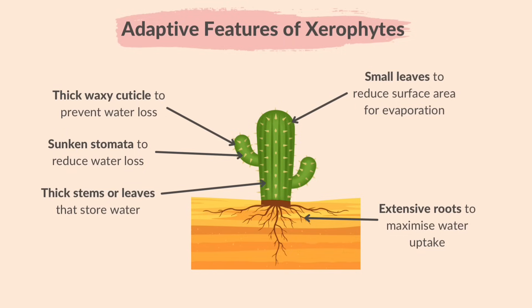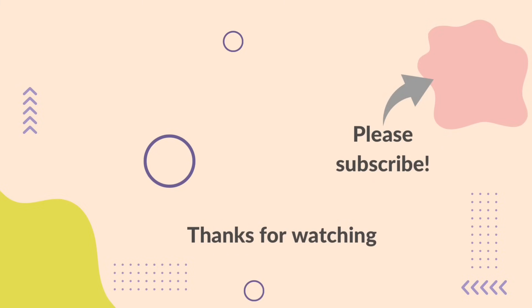You should be able to interpret images or other information about a species to describe its adaptive features. That concludes Part 1 of Chapter 18, Variation and Selection. Please visit our channel to explore the Cambridge IGCSE Biology Playlist where you can find Part 2 of Chapter 18. Hope this video helped you. Please share your thoughts and suggestions in the comments section. Thank you for watching and please don't forget to subscribe to IGCSE Study Buddy for more biology revision videos. Bye-bye!